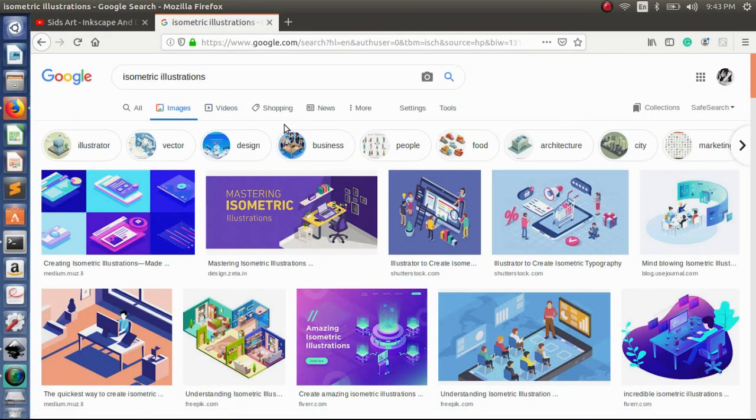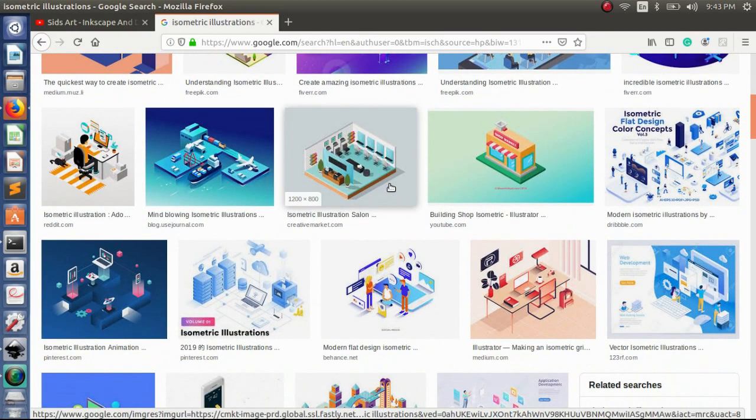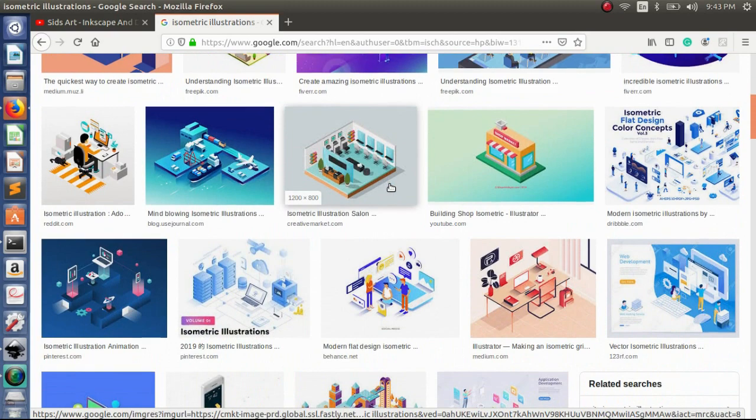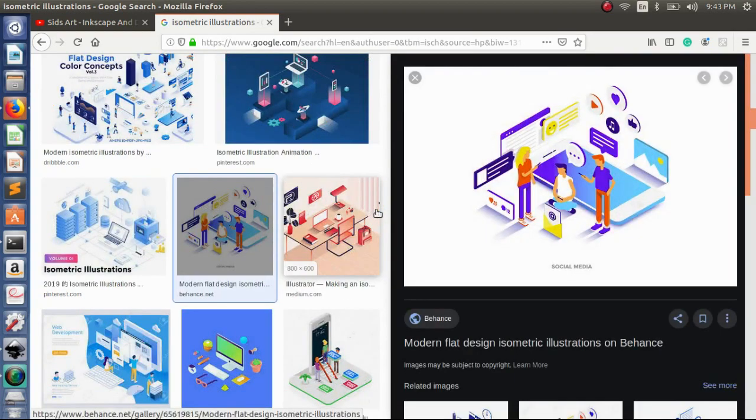But now I've decided to do something which I have never done, and that's called isometric illustrations. So basically what happened is I was going through multiple art styles and I came across this, and it's really fascinating how it allows us to draw 3D objects so beautifully on a 2D surface.